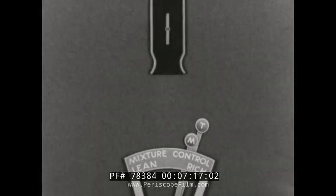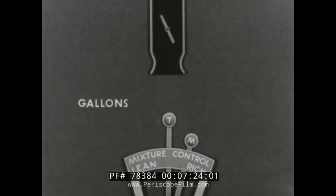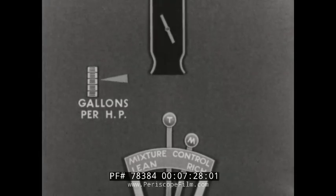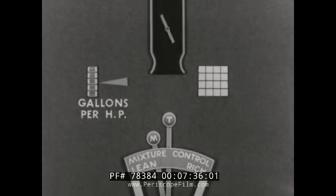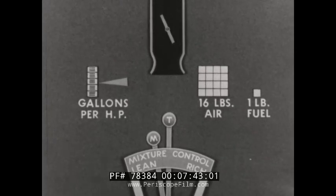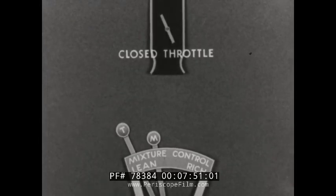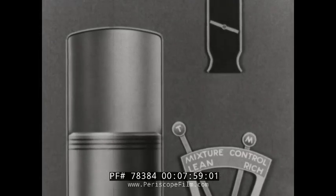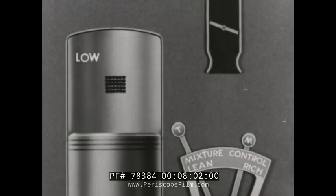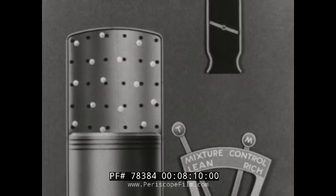At cruising speed, it is desirable to obtain the maximum economy of fuel by reducing the fuel consumption per horsepower to the best possible figure. A leaner mixture is therefore required, the ratio being about 16 parts of air to one part of fuel. When idling with throttle closed, the charge is greatly reduced. Expanding to fill the cylinder, its pressure is below atmospheric. Lower pressure and dilution of the reduced charge by the exhaust necessitate a richer mixture for satisfactory combustion.